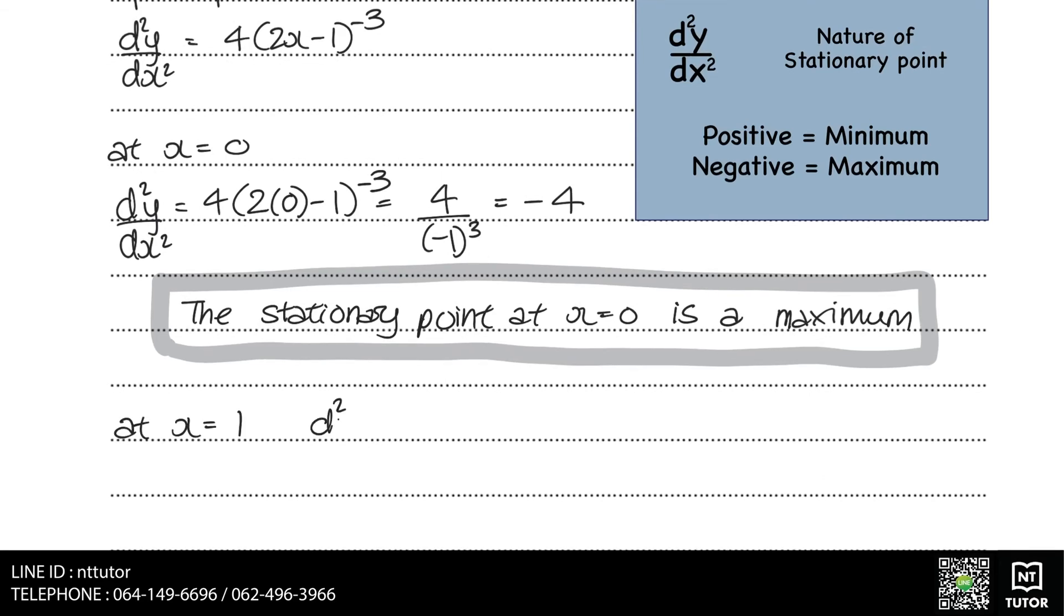We can do the same to find the nature of the stationary point at x equals 1 by substituting x equals 1 into d squared y over dx squared. This gives us a positive number, which means that that stationary point is a minimum.